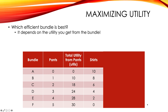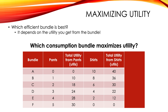Now, as we get into the total utility from shirts — the next column I'm going to reveal — it might look a little confusing at first. The reason is that because this is a trade-off situation, buying more pairs of pants means you have to buy fewer shirts, so the numbers are going to move in opposite directions. These utility numbers from pants get bigger going down, while the shirt utility numbers get smaller. Looking at total utility from shirts: when you consume zero shirts, at bundle F, your total utility from shirts is zero. With two shirts, your total utility from shirts is 12. And all the way up to buying 10 shirts at bundle A, your total utility from shirts is 40.